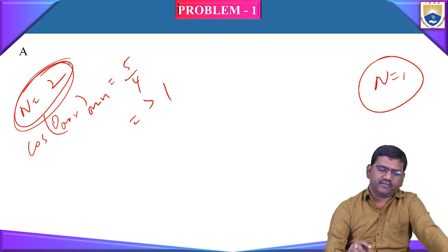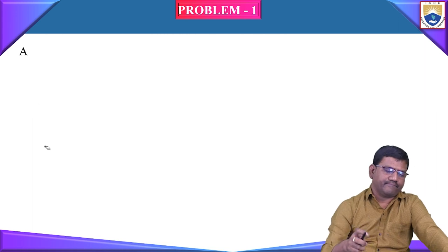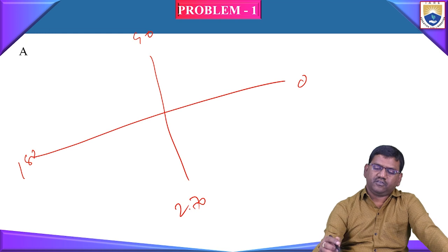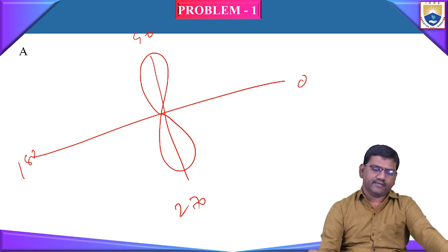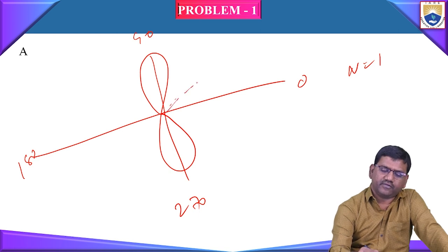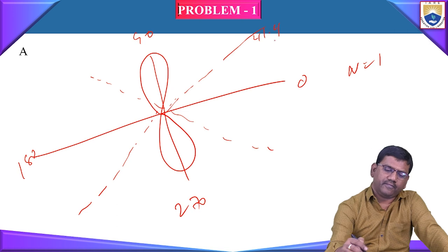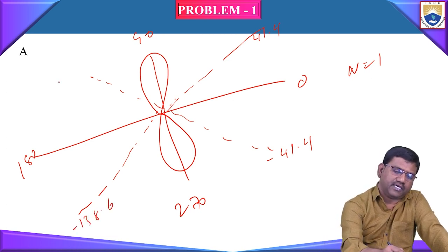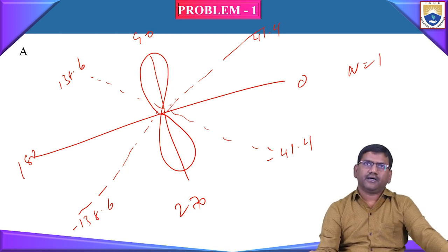When drawing the radiation pattern, the major lobe maxima for the broadside array are at 90° and 270°. The minor lobe maxima for N=1 are at 41.4°, 138.6°, -41.4°, and -138.6°. These are the minor lobes and these are all the data points we have obtained so far for minor lobe maxima.